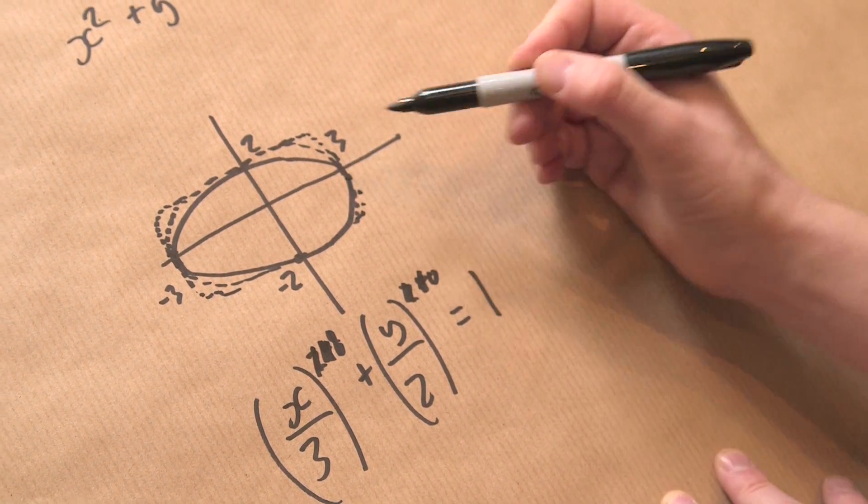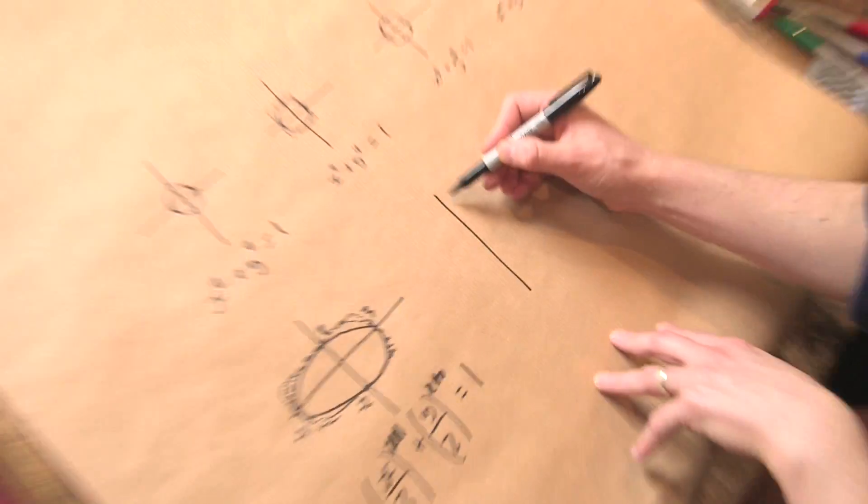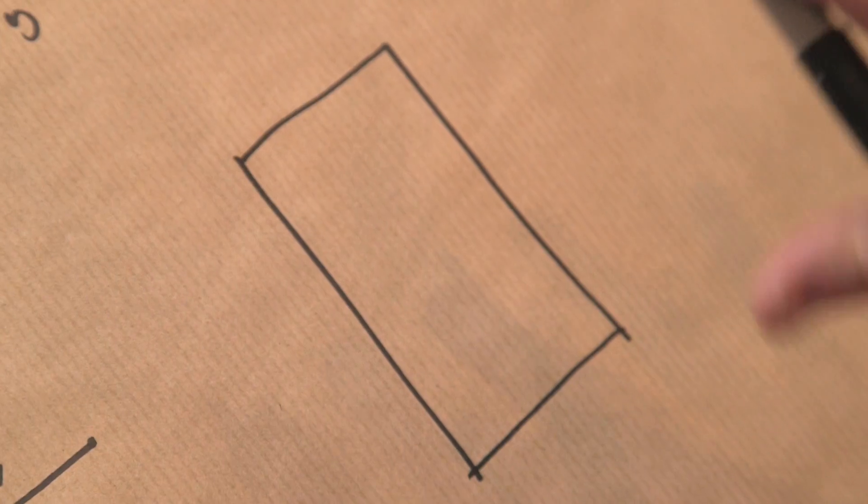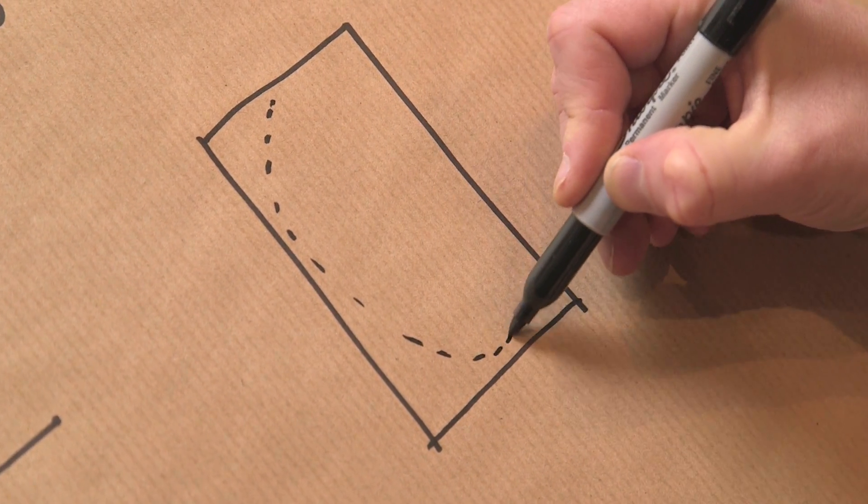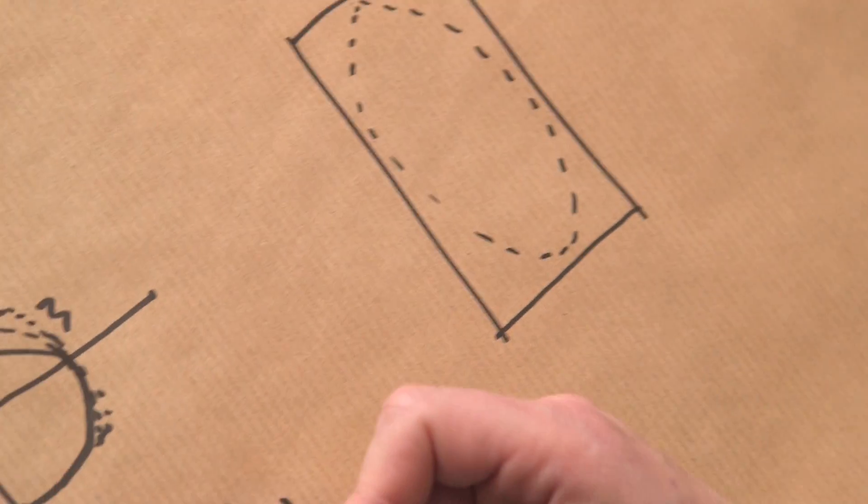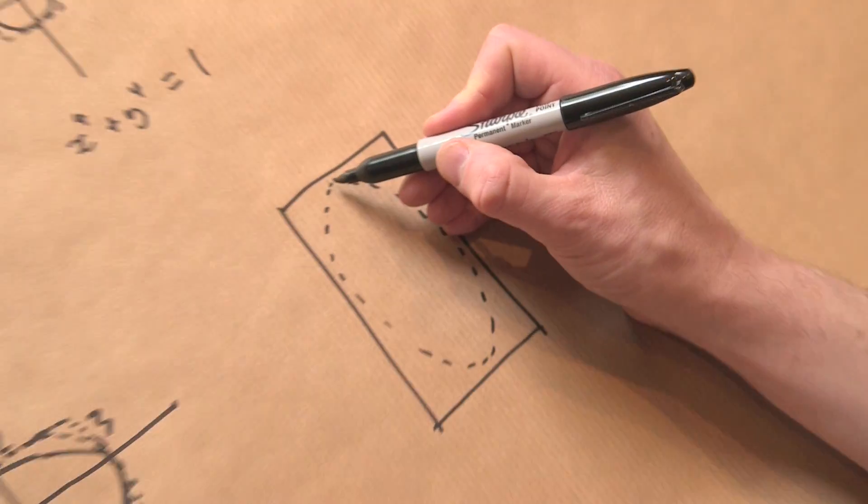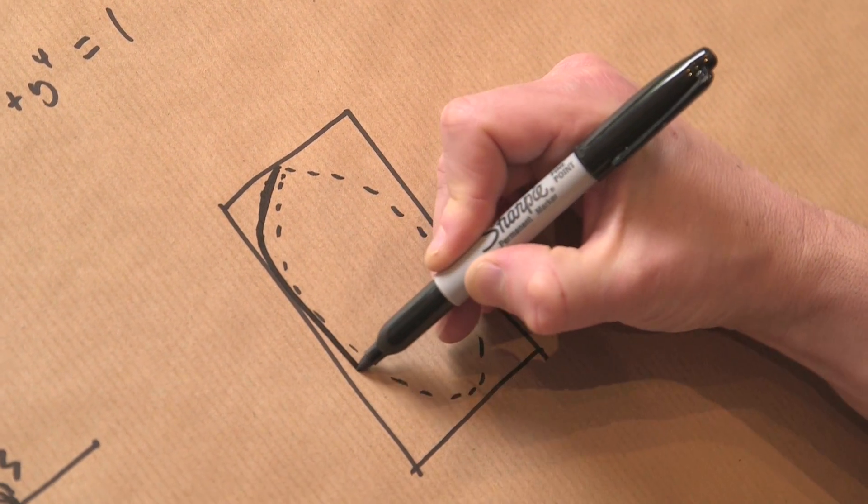So what Piet Hein, who had to try and find a shape for the traffic to go around in Sergels Torg is that he started. So just say here, this is the aerial view of Sergels Torg. And he started with the ellipse, which as I said before, couldn't do an ellipse, it's too narrow here. And he actually increased the exponent to get what he called a super ellipse.